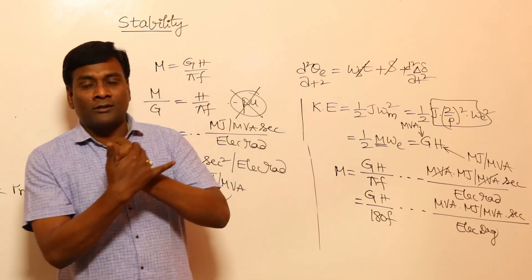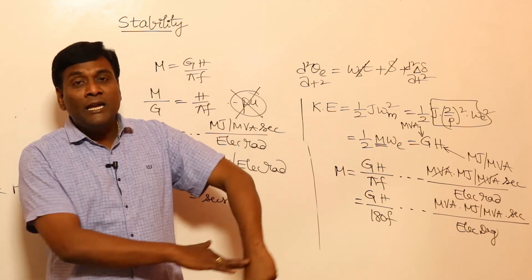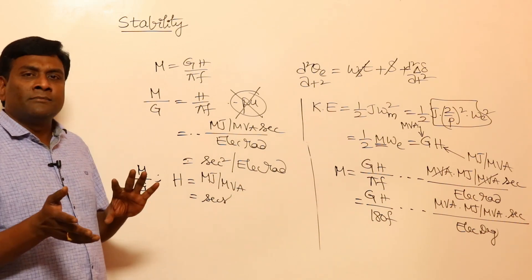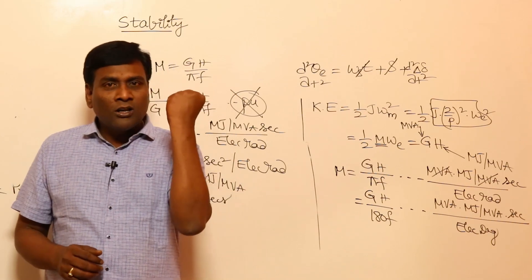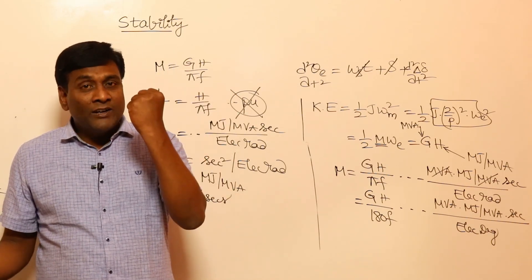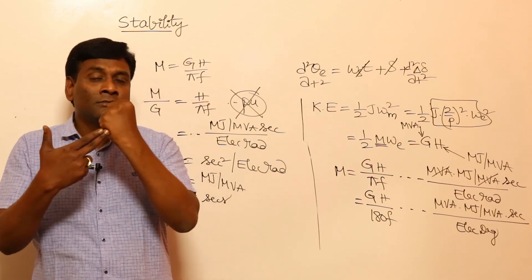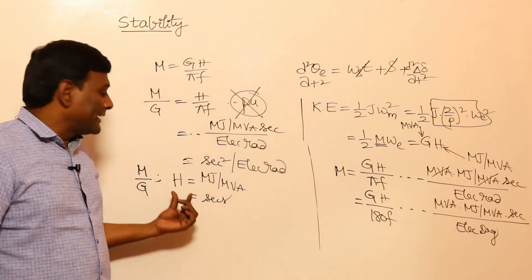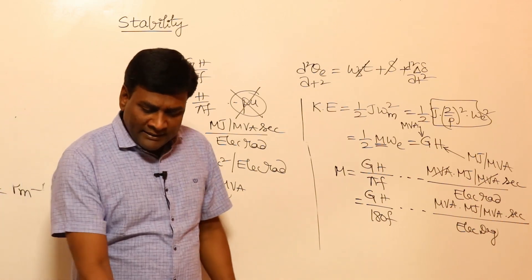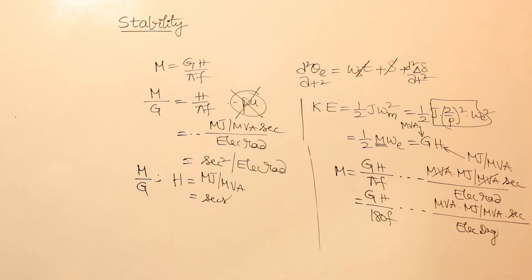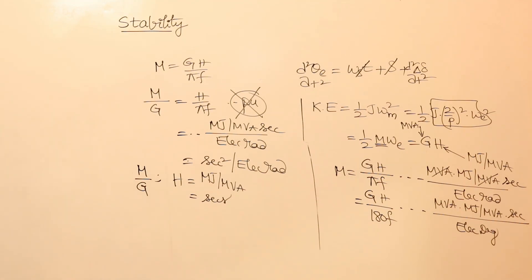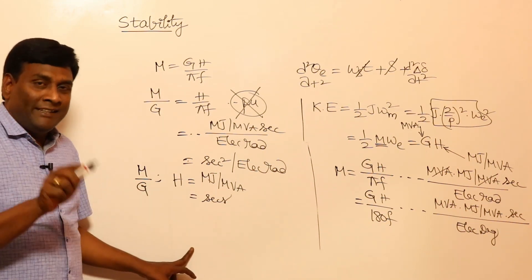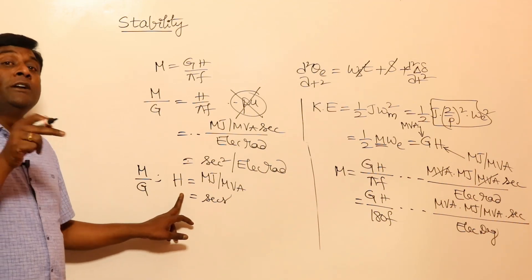Alternatively, H is the time for a rotor spinning at synchronous speed to come to standstill when rated opposing torque is applied. To summarize: M per unit really means M per unit of MVA (= M/G); H per unit really means H per unit of MVA. H is in seconds; M is in mega joule·seconds per electrical degree. These are dimensional quantities, not true per-unit values.